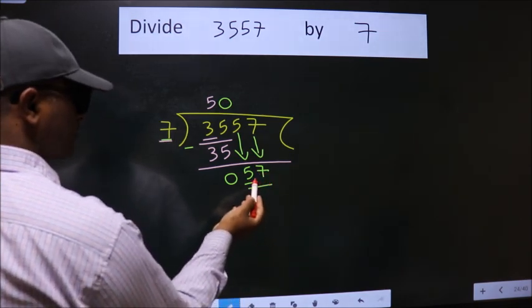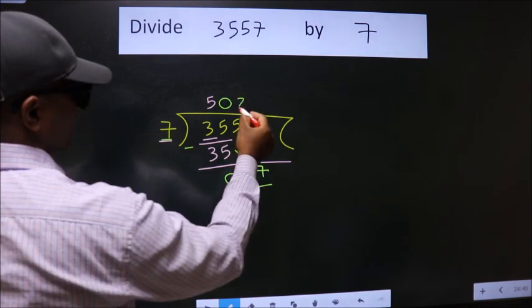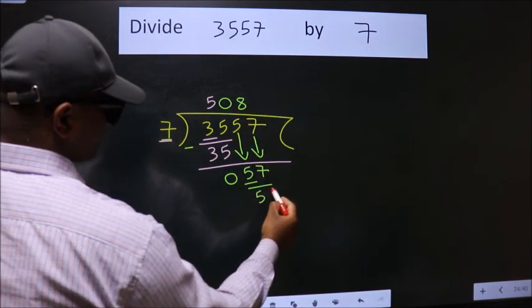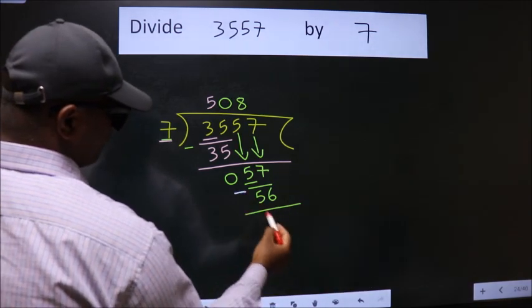A number close to 57 in 7 table is 7 8 56. Now, we subtract. We get 1.